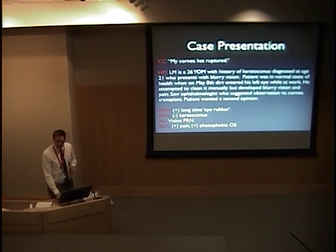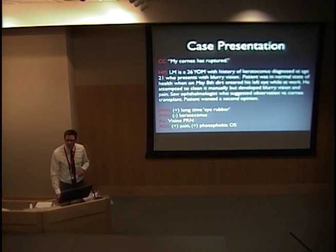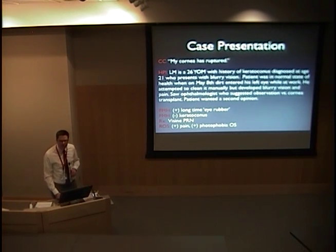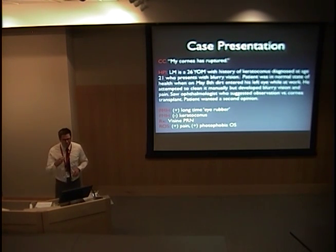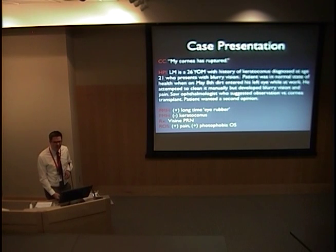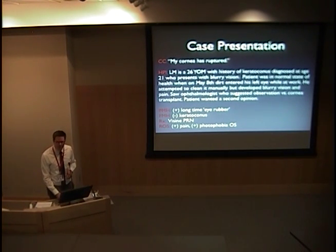So let's start with the case. My patient is a 26-year-old male. He has a history of keratoconus that was diagnosed about five years ago. He came into clinic because he said his cornea had ruptured. On May 8th he was at work, got some dirt in his eye, decided to clean it out with his hands, and subsequently developed blurry vision and pain. He saw an outside ophthalmologist who said to him, let's observe this, or we can do a corneal transplant. Wanting a more conservative therapy, he decided to visit us and see what we could do for him.